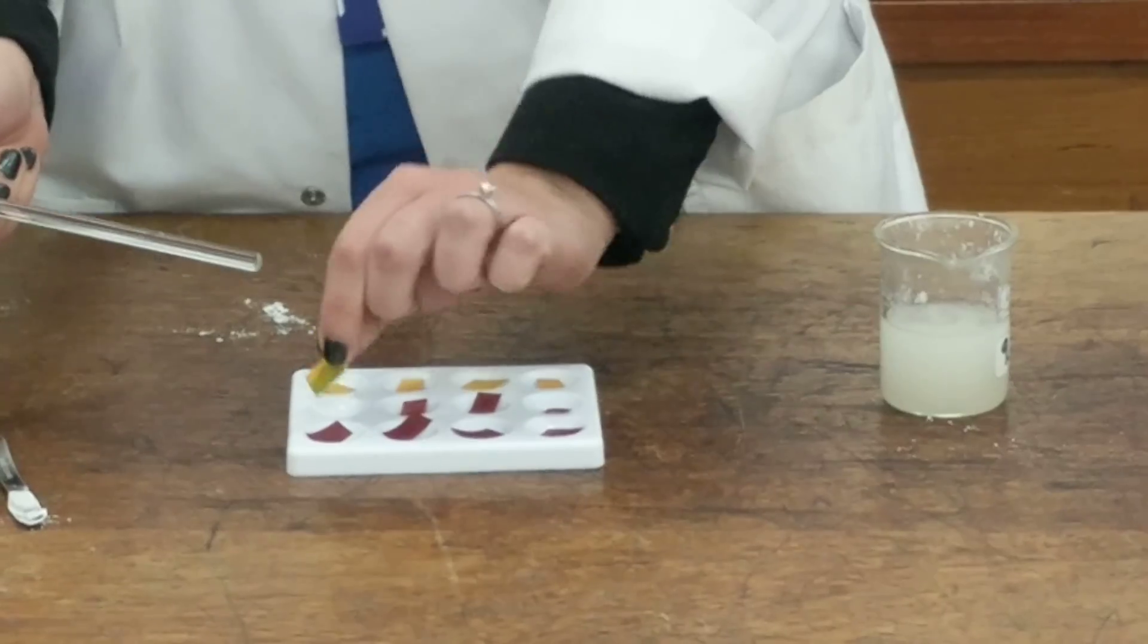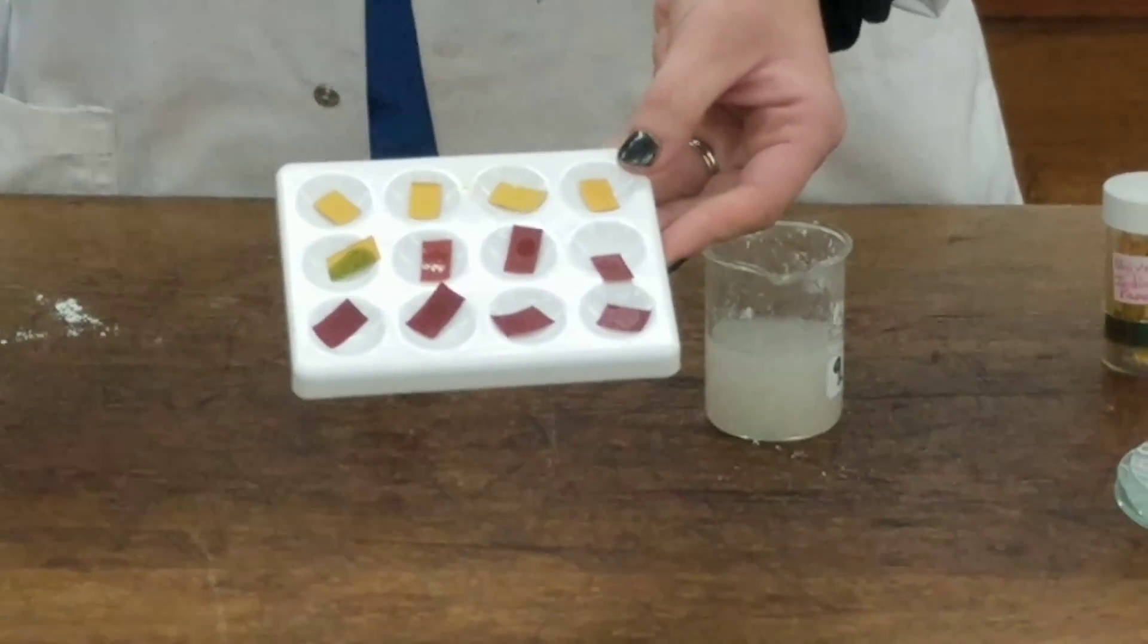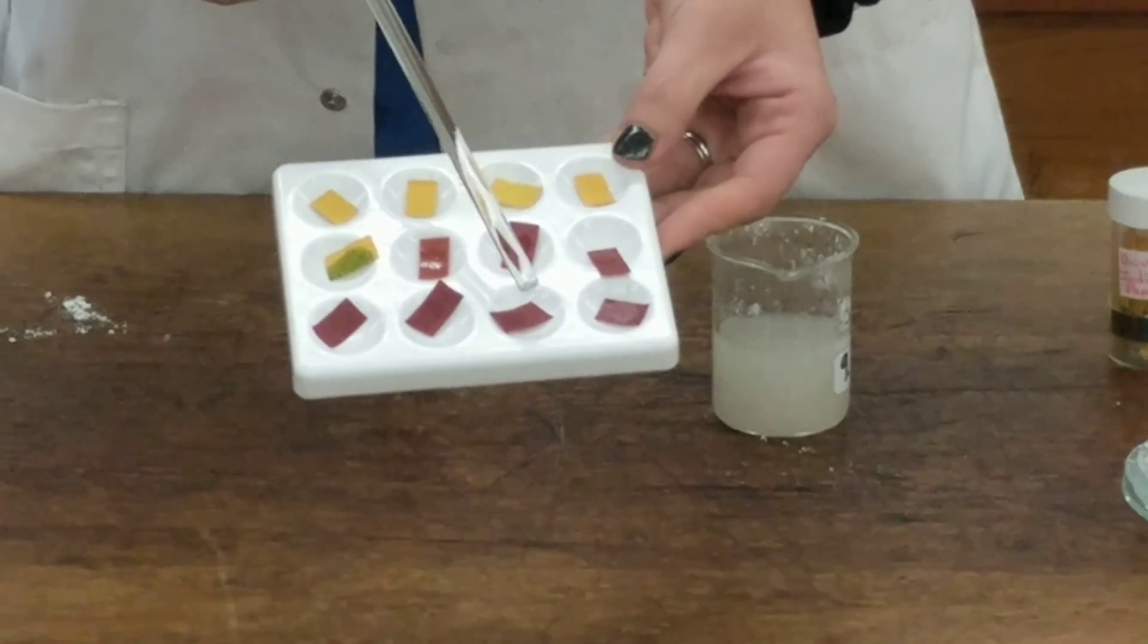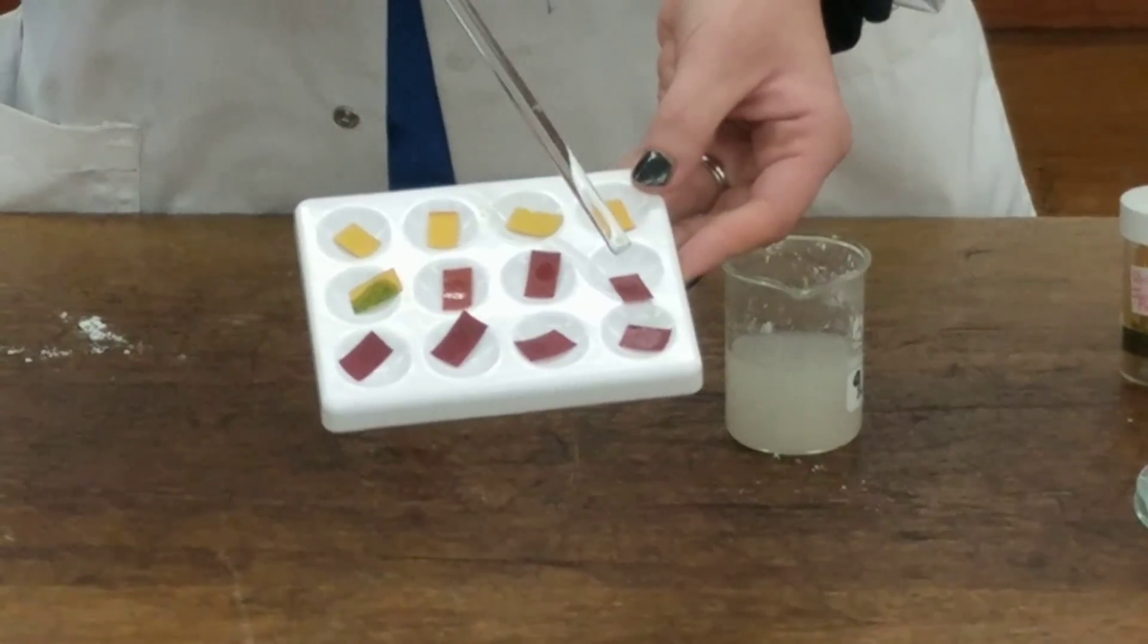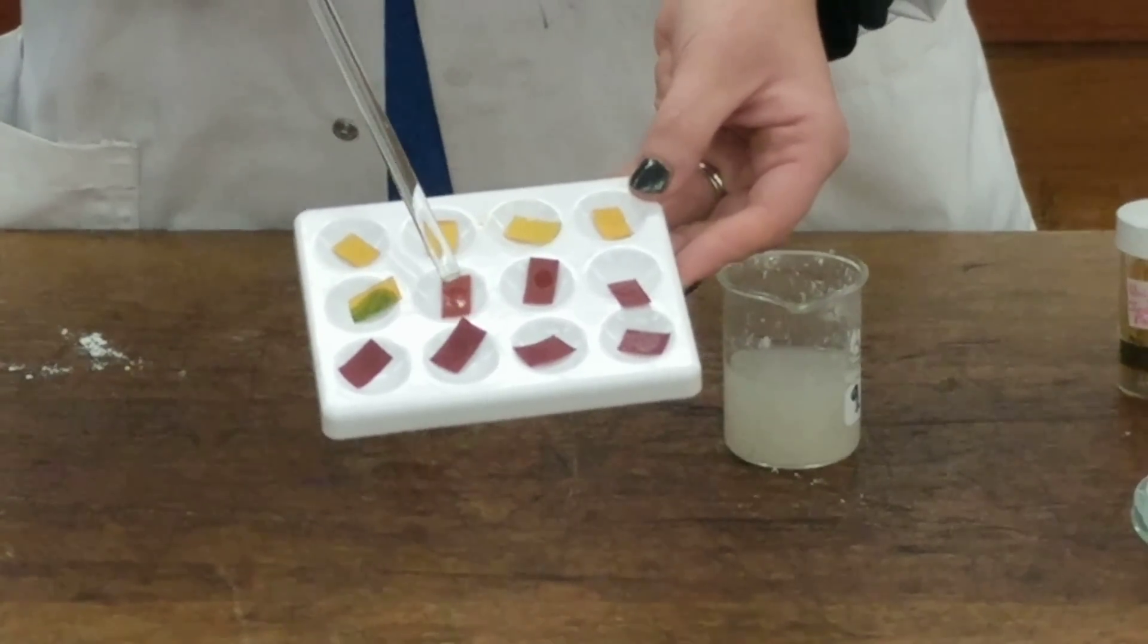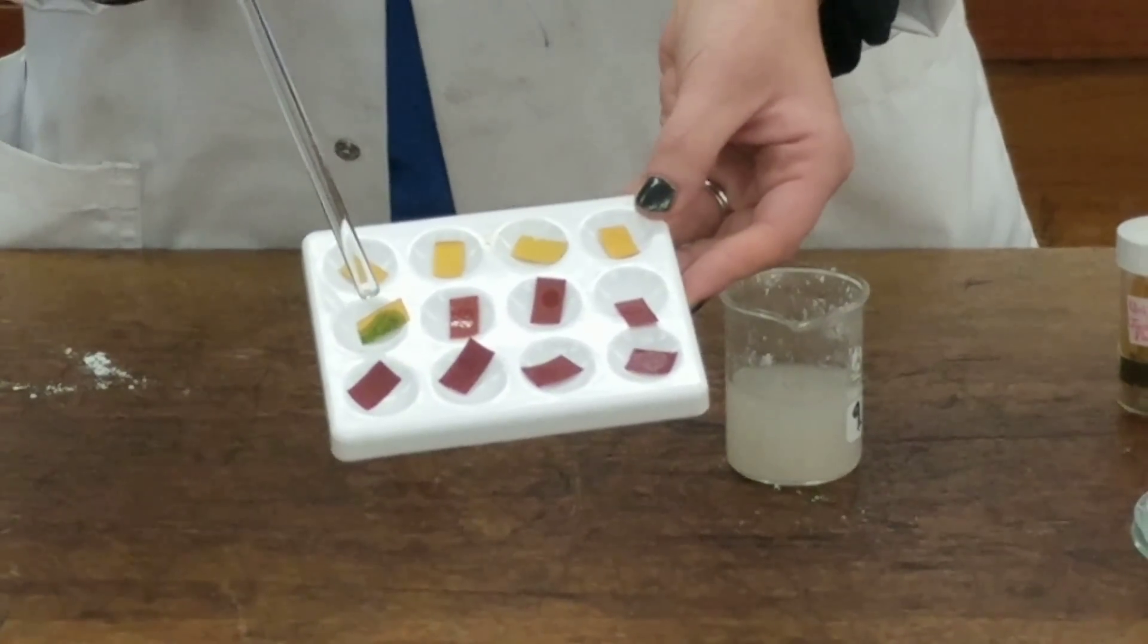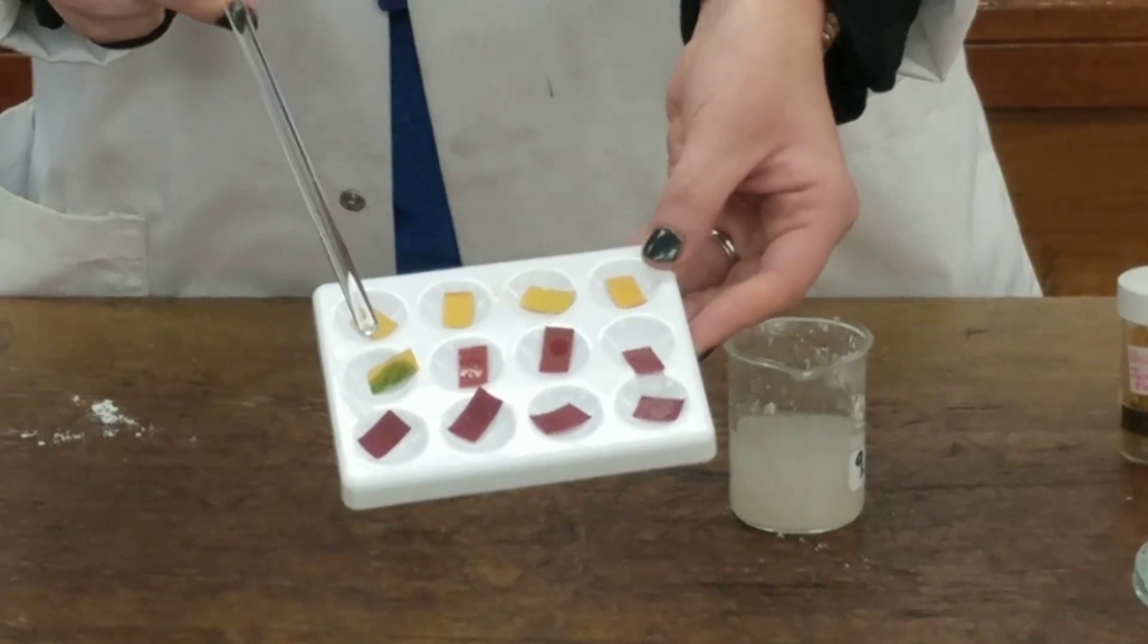And there, you can see, it has taken 0.3, 0.6, 0.9, 1.2, 1.5, 1.8, 2.1, 2.4 grams to neutralise the one mole hydrochloric acid, 50 centimetre cubed.